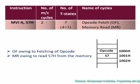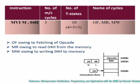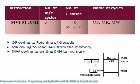The other cycles will be changing depending on the meaning of the instruction and the data associated with that instruction. The next instruction is MVI M, immediate data. In this particular case, the number of cycles required are 3: opcode fetch owing to fetching of opcode, memory read owing to reading of the given data 04H from the memory, and memory write owing to writing of 04H to the memory. So the number of T states required are 10.